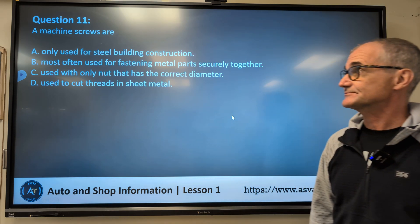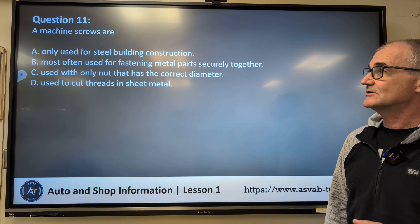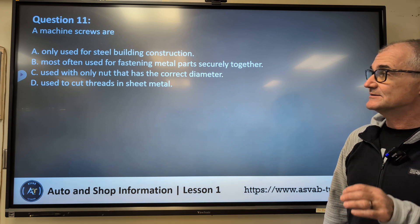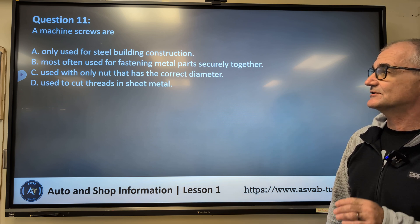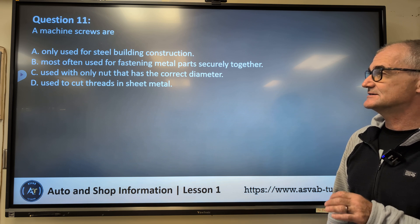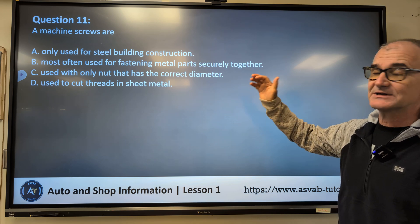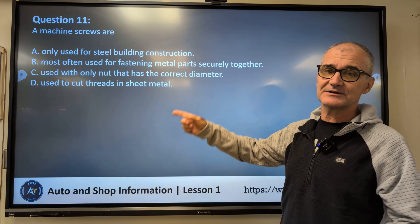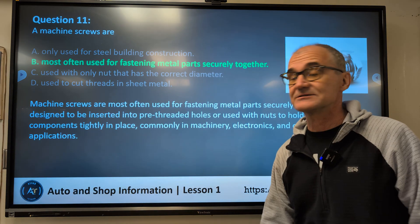Question number eleven: Machine screws are — A, only used for steel building construction; B, most often used for fastening metal parts securely together; C, used only with a nut that has a correct diameter; D, used to cut threads in sheet metal? Even if you don't really know what a machine screw is for, answer B makes the most sense because it's not exclusive. You can eliminate A, C, and D. Correct answer is B.